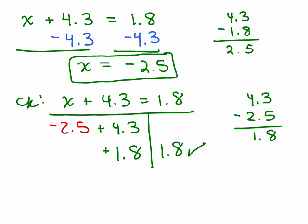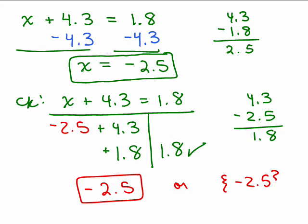Negative 2.5 is the answer, not 1.8, so you could write your answer as just negative 2.5 is the answer, or you might write that as negative 2.5 using the braces, not formal, formal.